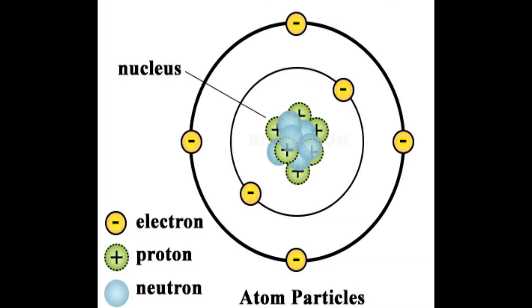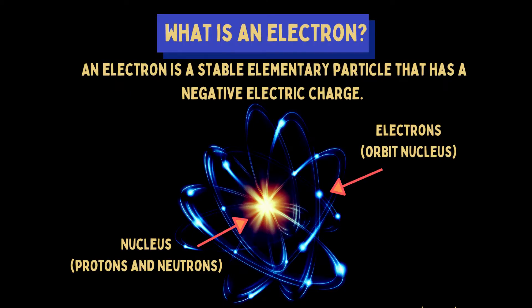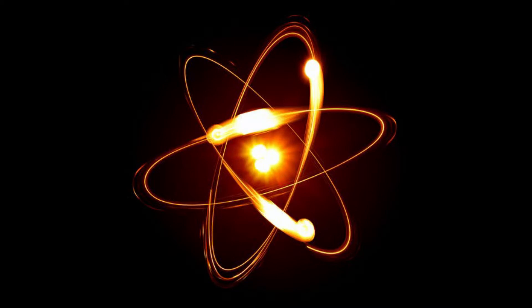Understanding atoms is key to understanding how electricity works. Atoms are made of protons, neutrons and electrons. An atom consists of one or more positively charged protons bound to one or more neutral neutrons, found in the center of an atom called the nucleus, with one or more negatively charged electrons moving around them.